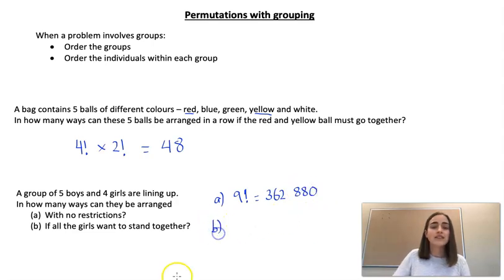Part b says how many ways can they be arranged if all the girls want to stand together. So that means we've got five boys and we're taking the girls all as one group. So that means if we arrange the groups first we would have 6! different ways of arranging them, and then we're going to multiply it by the number of ways we can arrange the girls amongst their own group.